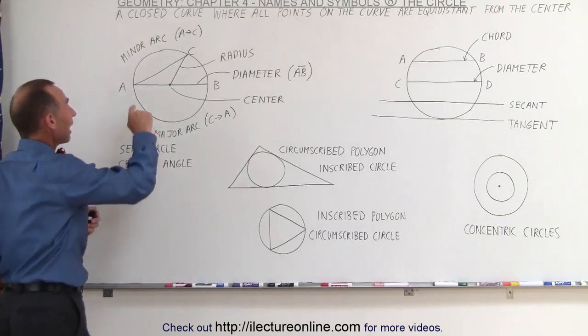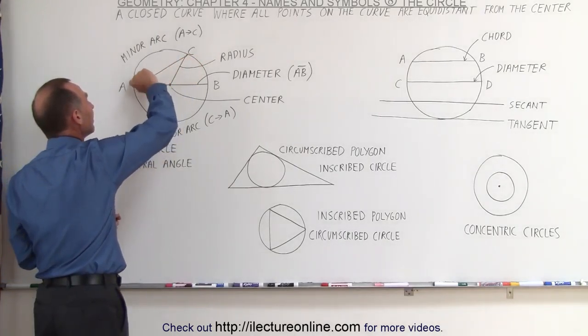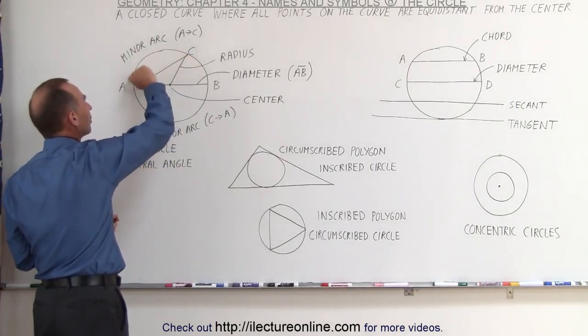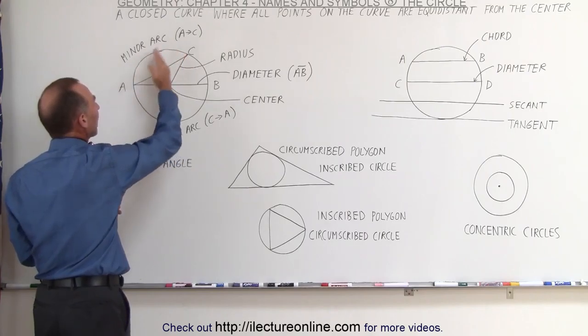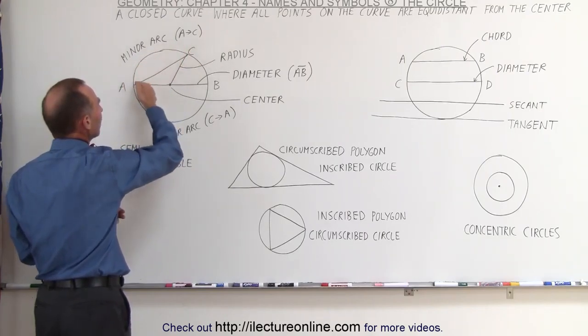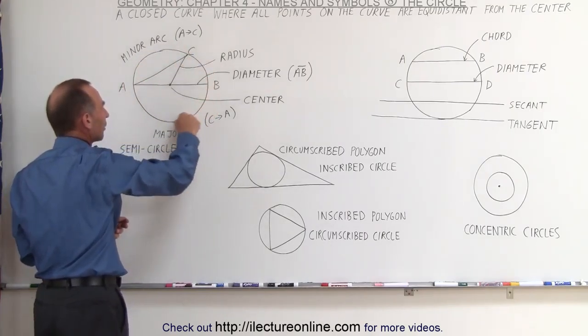And if we draw a line from A to C, then this portion of the circle is called the minor arc, because it spans an angle of less than 180 degrees, and then this other portion right here is called the major arc. So those are the main portions of a circle.